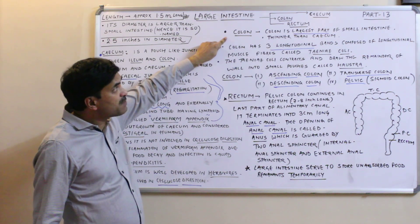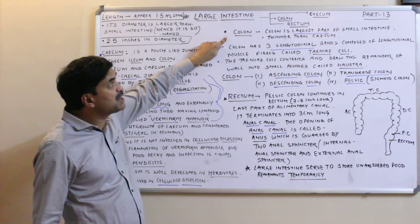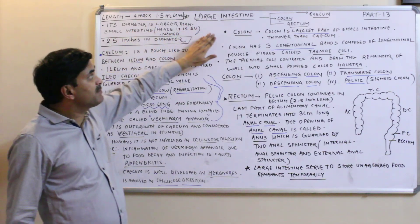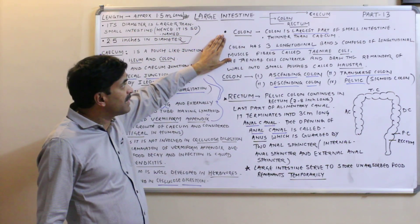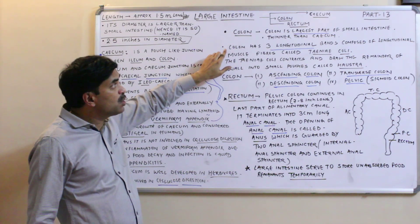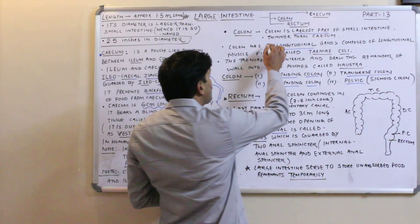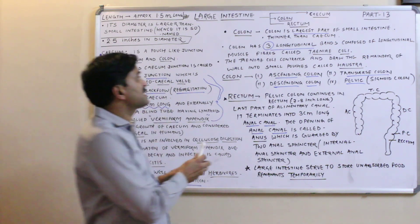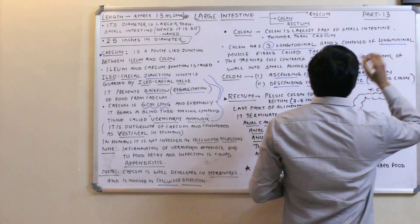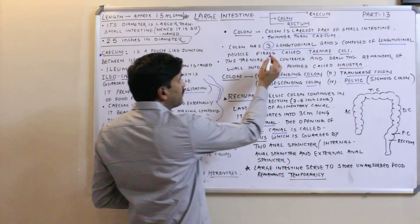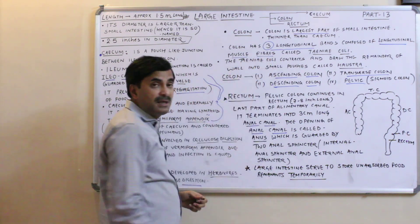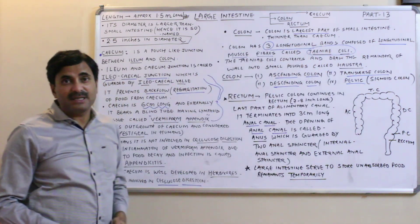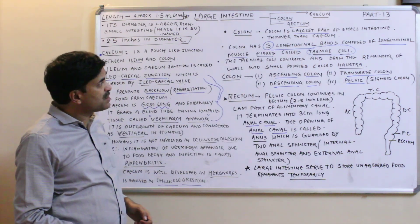The colon is the largest part of the large intestine — it covers the maximum portion of the 1.5-meter length. The colon has three longitudinal bands composed of longitudinal muscle fibers, and these are called taeniae coli.